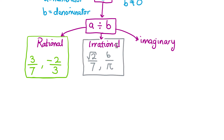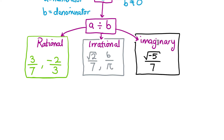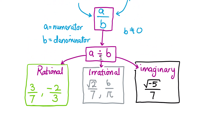Finally, for imaginary numbers, we have an example where we take the square root of a negative number — in this case, negative five. This is considered to be an imaginary number, and as the numerator it is divided by a specific number, seven. The combination is a fraction, but overall it is classified as an imaginary number. So here are the three ways fractions are classified: as rational fractions, irrational fractions, and imaginary fractions.